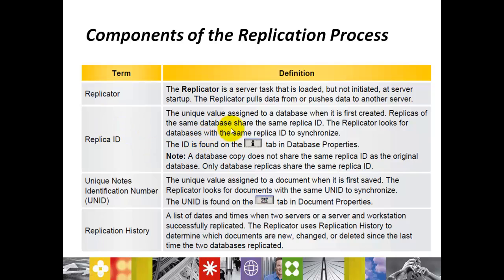ReplicaID is a unique value assigned to a database when it is first created. Replicas of the same database share the same Replica ID. The replicator looks for databases with the same Replica ID to synchronize. The ID can be found on the Information tab in your database properties. A database copy does not share the same Replica ID as the original database — only database replicas share the same Replica ID.